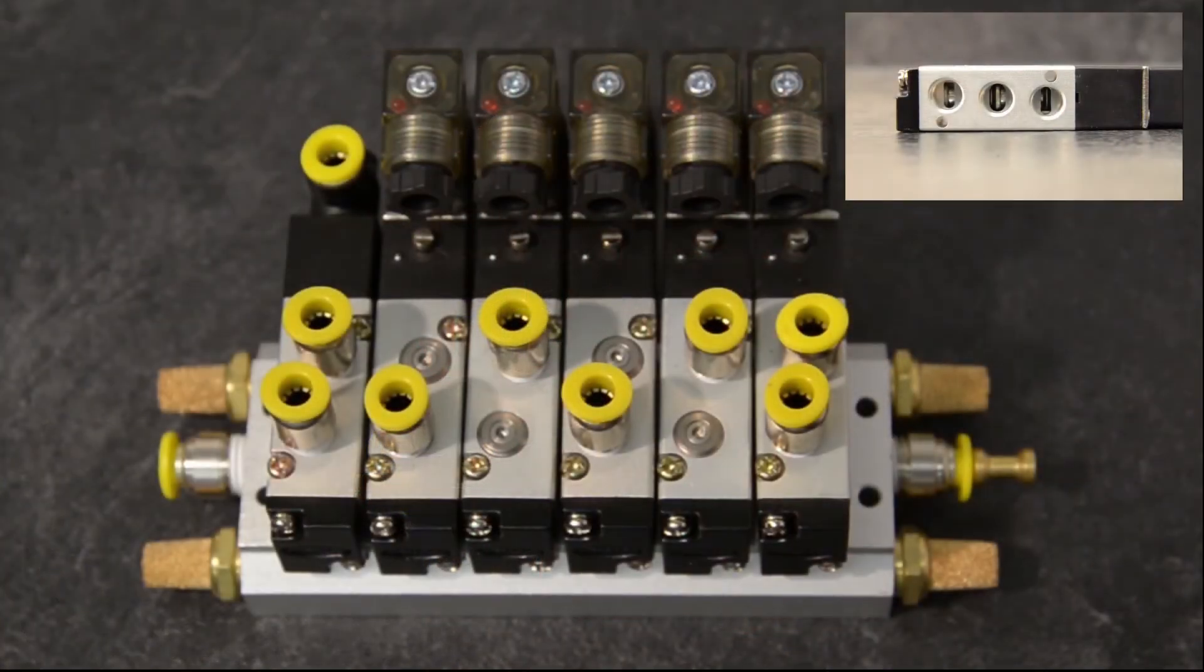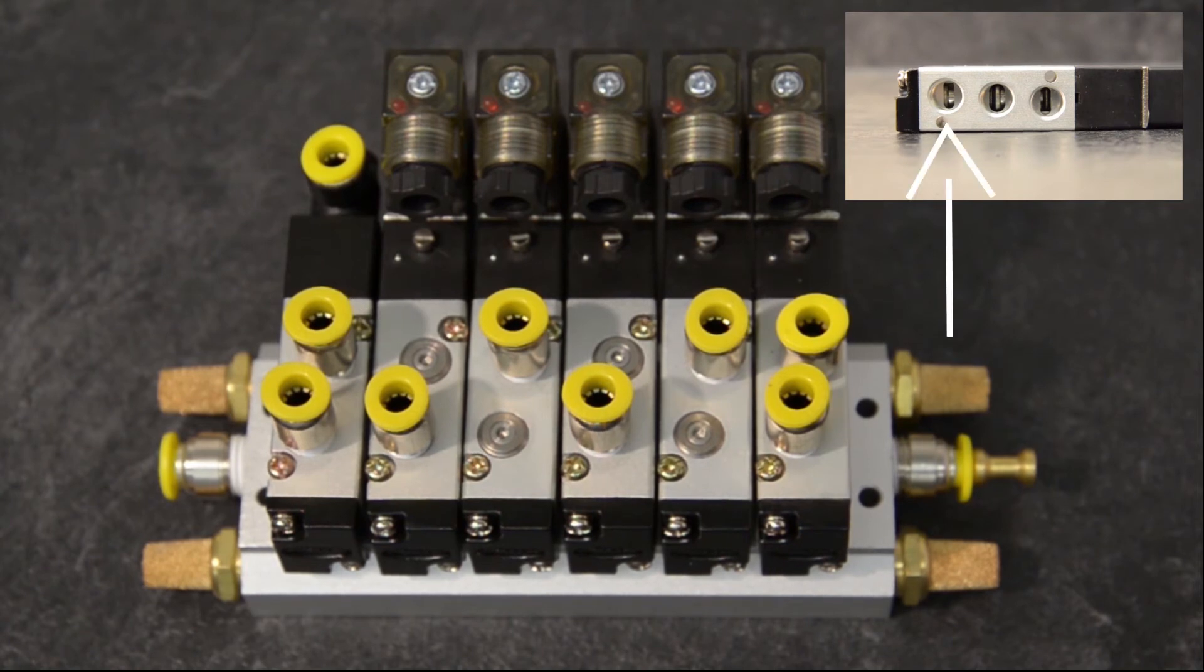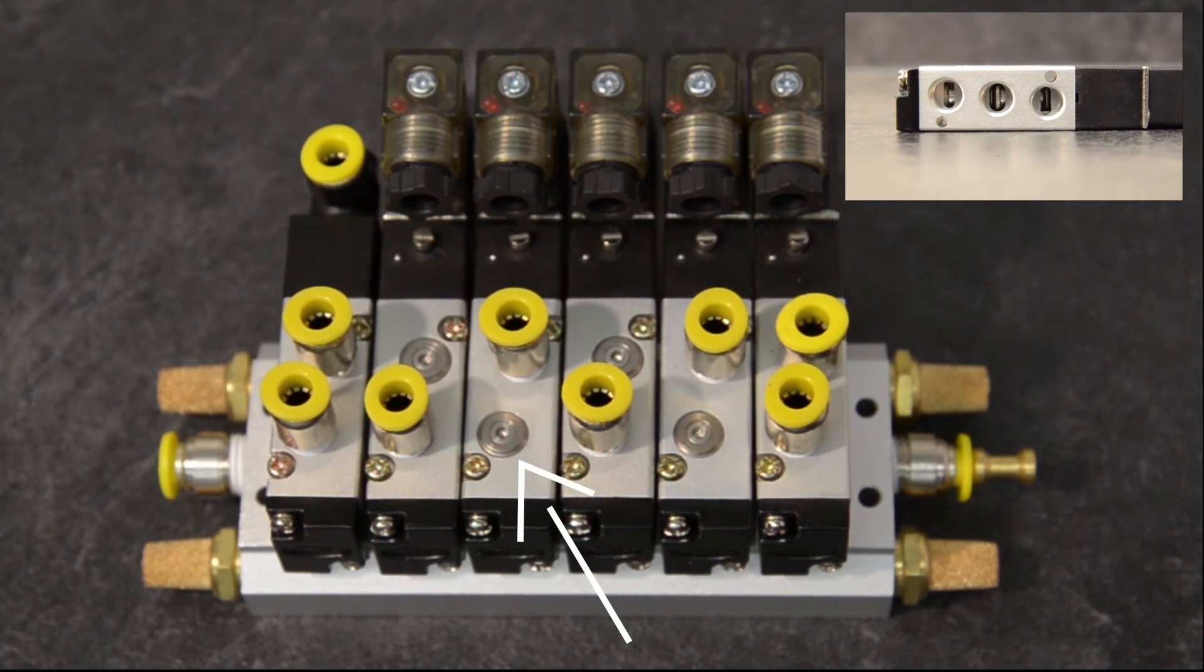In order to get a normally open two-way, we plug the B port and plug the exhaust port EA. In order to get a normally closed two-way, we plug the A port and plug the exhaust port EB.